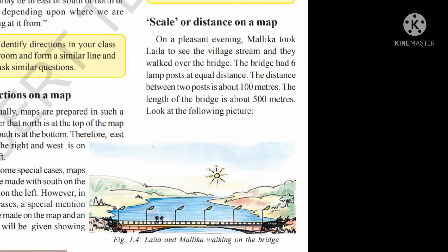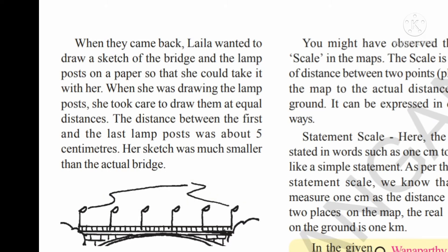When we calculate the total, they have 500 meters. When they came back, Lila wanted to draw a sketch of the bridge and the lamp posts on paper so that she could take it with her. When she was drawing the lamp posts, she took care to draw them at equal distances. The distance between the first and the last lamp post was about 5 centimeters.